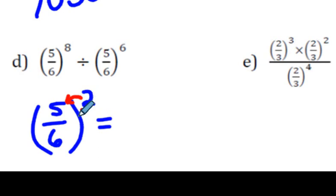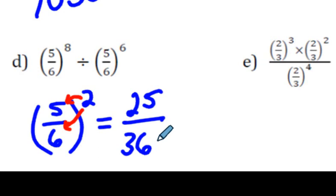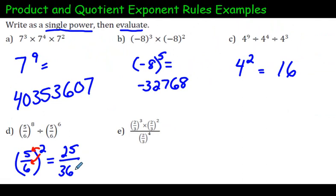Just remember that the exponent on the outside goes to meet everybody on the inside. The 2 will go to meet everybody on the inside here. So 5 to the power of 2 is 25, 6 to the power of 2 is 36. And then if you are able to, you could reduce this fraction. 25 over 36, I don't believe it can. So in this case we're done.